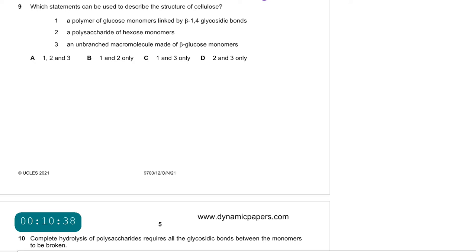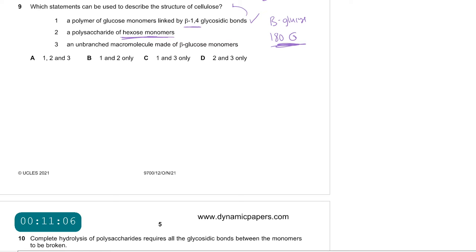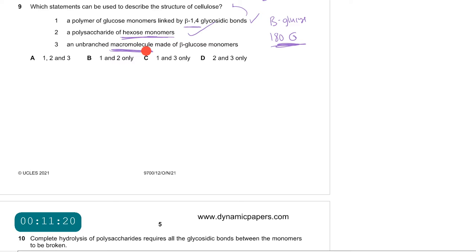Question 9: which statements describe the structure of cellulose? Statement 1 — a polymer of glucose monomers linked by beta-1,4 glycosidic bonds — is correct because cellulose is made of beta-glucose rotated 180 degrees to each other. Statement 2 — a polysaccharide of hexose monomers — is correct because beta-glucose is a hexose sugar. Statement 3 — an unbranched macromolecule made of beta-glucose monomers — is correct. The answer is A.